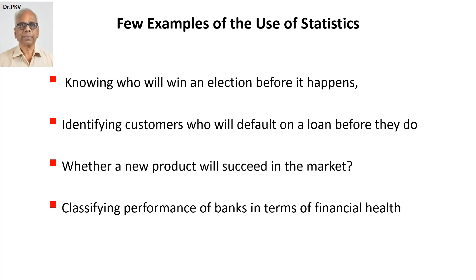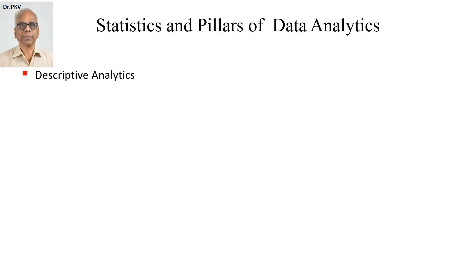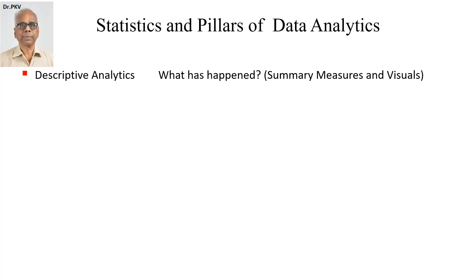For example, banks can be classified as financially very sound, moderately sound, or poor in terms of financial health — statistics can be used for this. There are four pillars of data analytics. The first is descriptive analytics, which deals with what has happened to the numbers. You use summary measures and visuals — measures of central tendency, measures of variation — and visuals like histograms, frequency polygons, box plots, and a host of graphics, which help you understand patterns in the data at a glance.